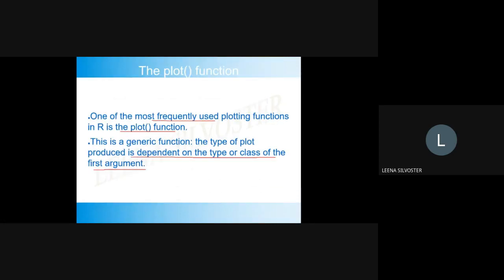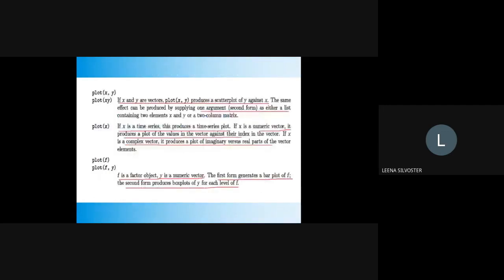One of the most frequently used plotting functions is the plot() function. Its behavior depends upon the type or class of the first argument. The syntax is plot(x, y). If x and y are vectors, it will produce a scatter plot. If you supply a single argument, it will be either a list containing two elements x and y, or a two-column matrix. If you supply a single argument and it is a time series element, it produces a time series plot.